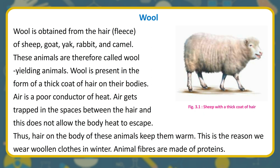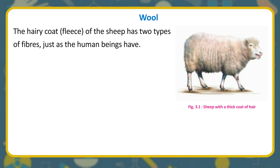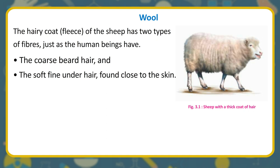Animal fibers are made of proteins. The hairy coat, or fleece, of the sheep has two types of fibers — just as human beings have: the coarse beard hair, and the soft fine under hair found close to the skin. The soft fine hair provides fibers to make wool.